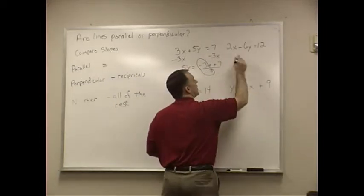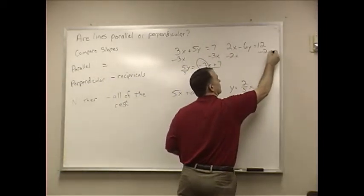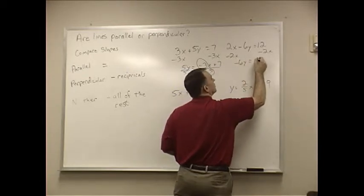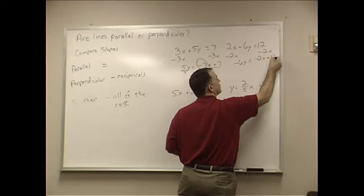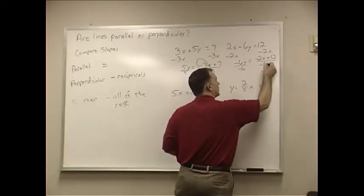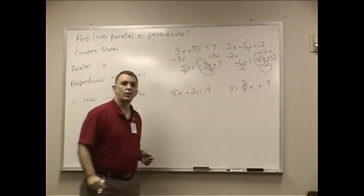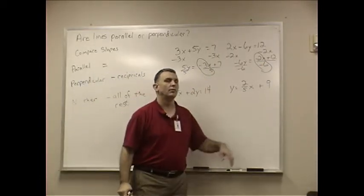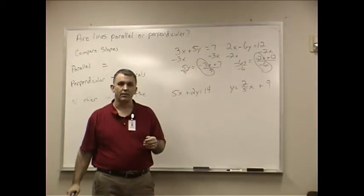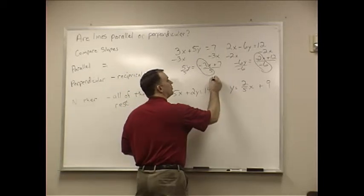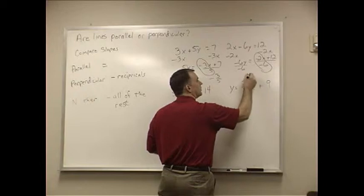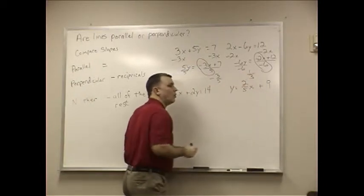Let's look at this one right here now. Minus 2x minus 2x. Negative 6y equals negative 2x plus 12. Divide by negative 6. Are those slopes equal? Not even close. Negative divided by a negative is a positive. So for my slopes here, I've got negative 3 fifths. And I see 2 sixths, that will turn into 1 third.